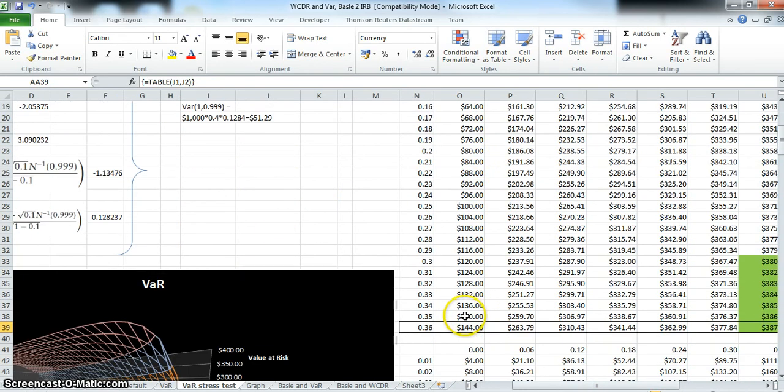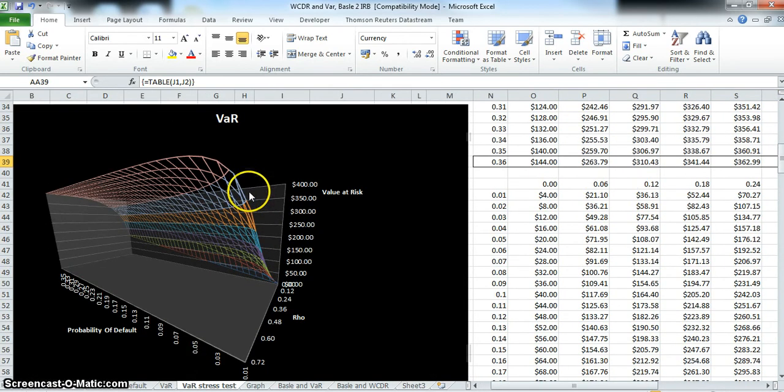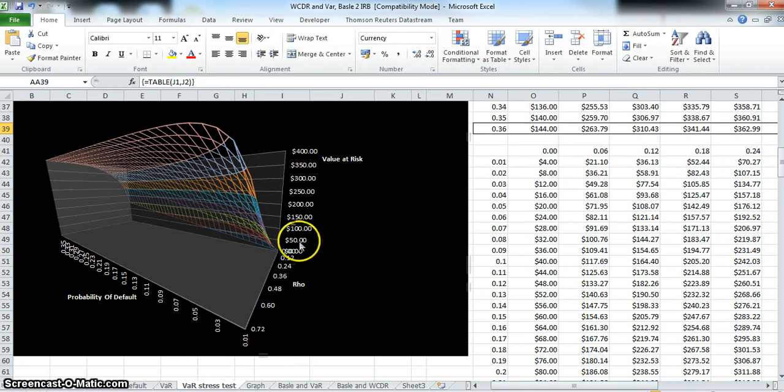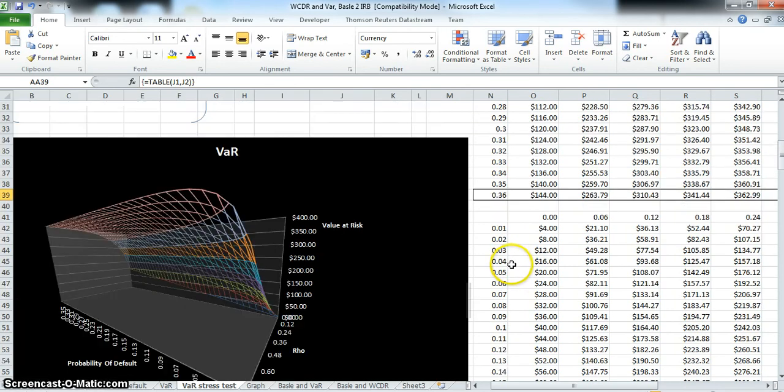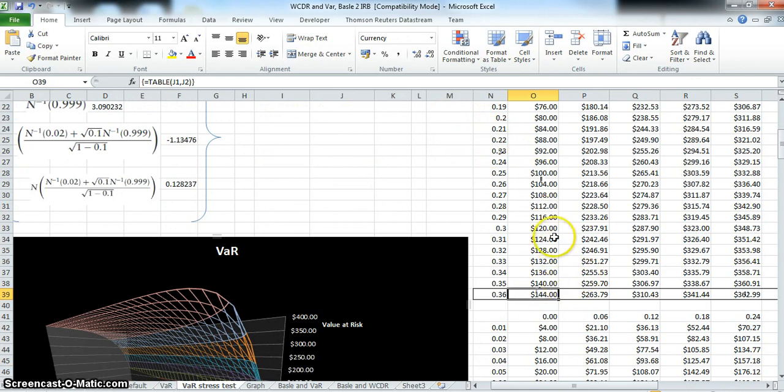When we graph that and estimate a Value at Risk graph, we take that data table that we worked out and set it up as a graph. What we observe is as rho increases, there is a steady increase in the Value at Risk. Also, as the probability of default increases, we get a steepening of the curve here, so we more quickly reach higher values. As the probability of default increases, we also get an increase in the Value at Risk.